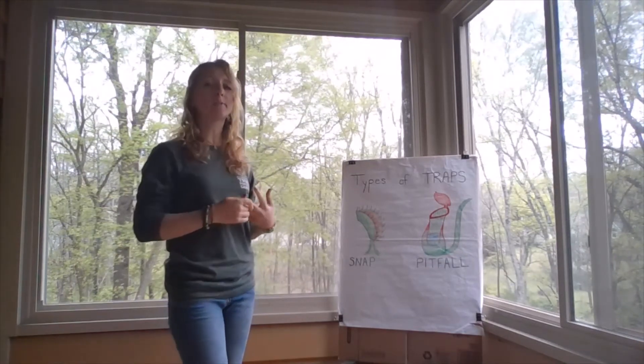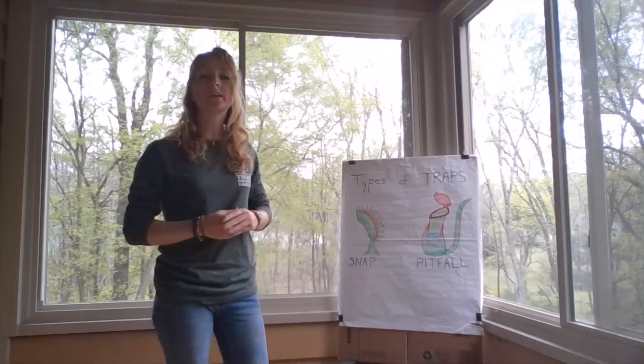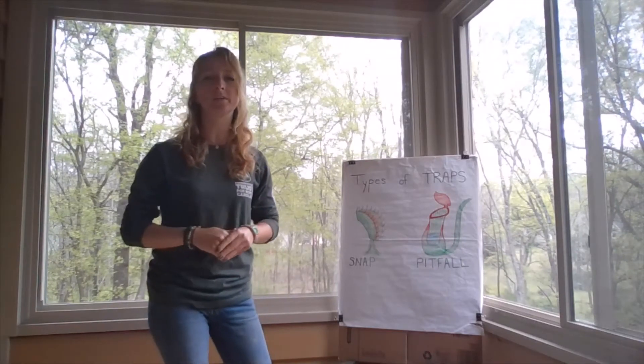First is a snap trap. Snap traps utilize rapid leaf movements to close around prey and trap them. They secrete nectar on the inside of the trap to lure in their prey.